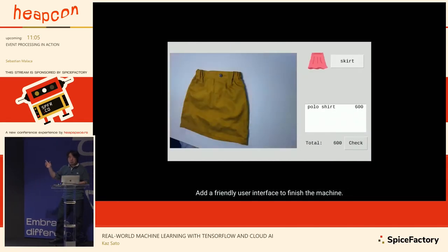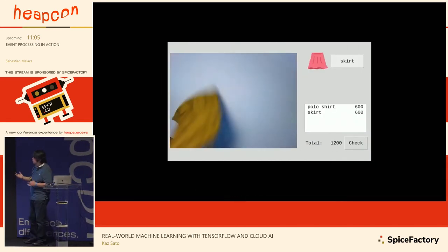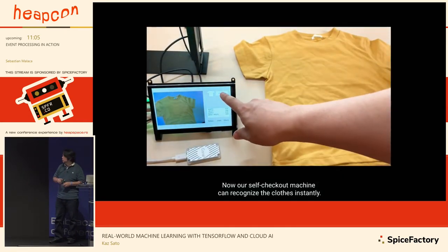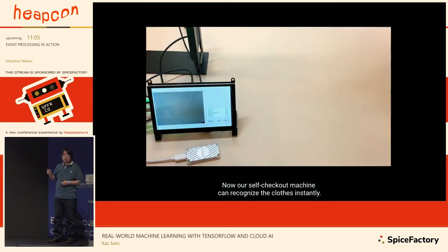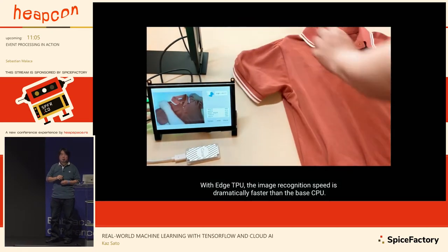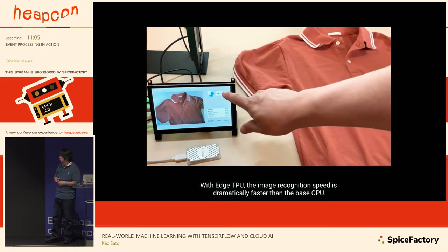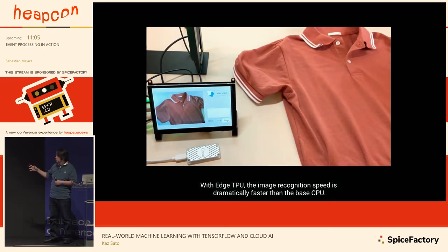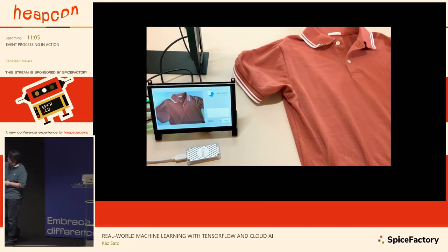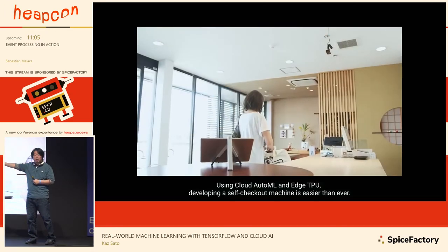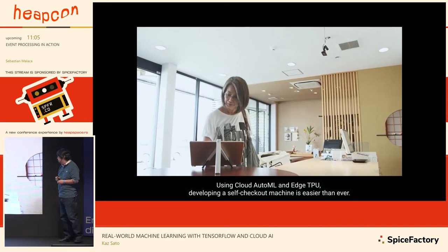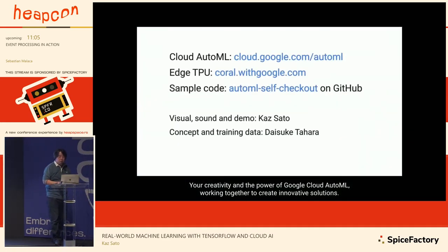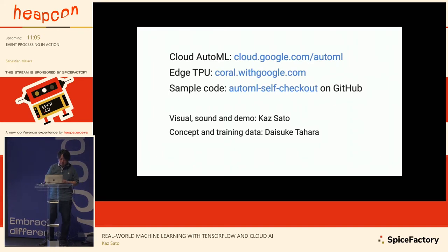I built my own self-checker system for dry cleaners using about 50,000 images of different clothes and wearables. It took a couple of days — actually, I spent many days building the UI with the old Python API. It's so easy to build your own customized model using AutoML.